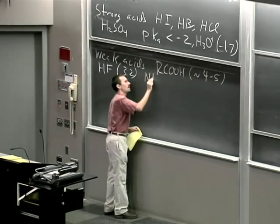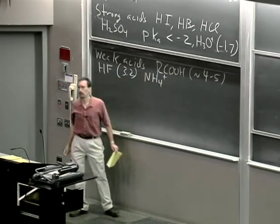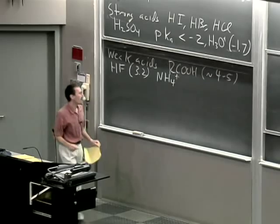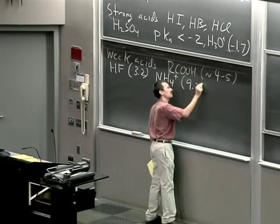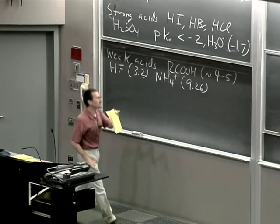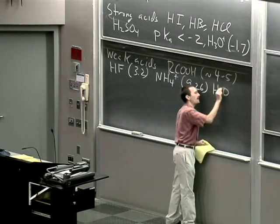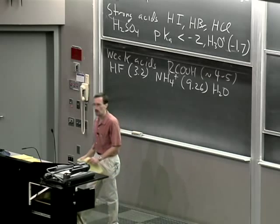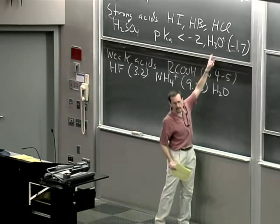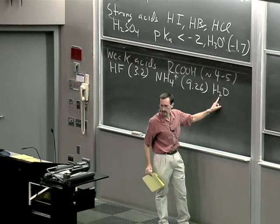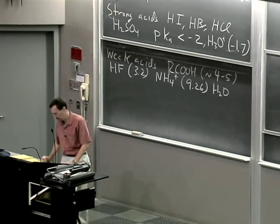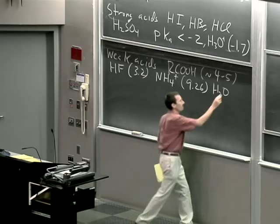Moving down in pKa, the ammonium ion, NH4+, which we used in our previous lecture as an example of equilibria, has a pKa of 9.26. And then, still weaker, water is amphoteric. Water can act either as a base — picking up a proton to give hydronium ion — or as an acid — giving up a proton to form hydroxide ion. As an acid, water is a weak acid; its pKa is 15.7.